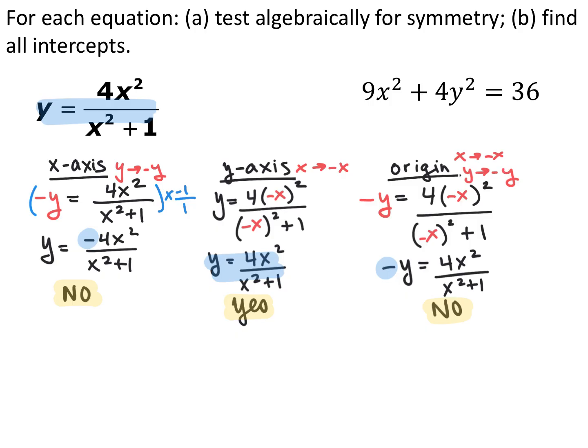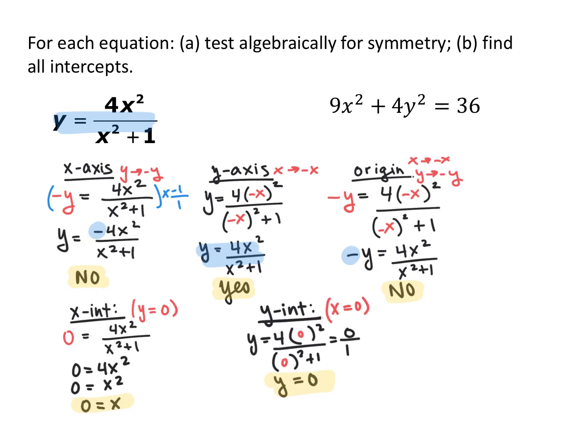The key point: whatever symmetry you're testing for, replace the opposite variable with a negative, use parentheses, simplify, and see if you get back to the original. For the intercepts of y equals 4x squared over (x squared plus 1): for the x-intercept, let y equal 0. For a fraction to equal 0, the numerator must equal 0 — so 4x squared equals 0, meaning x equals 0. For the y-intercept, let x be 0: y equals 4(0) over (0 plus 1), which gives 0 over 1, so y equals 0. When the x-intercept is 0, the y-intercept must also be 0 because the graph passes through the origin.